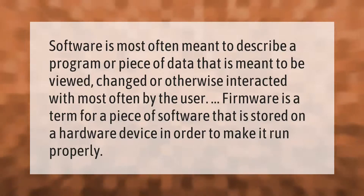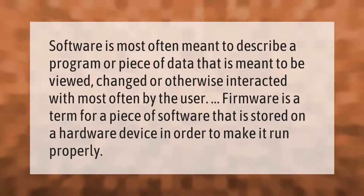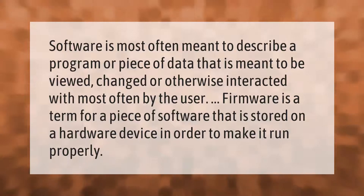Software is most often meant to describe a program or piece of data that is meant to be viewed, changed, or otherwise interacted with, most often by the user. Firmware is a term for a piece of software that is stored on a hardware device in order to make it run properly.